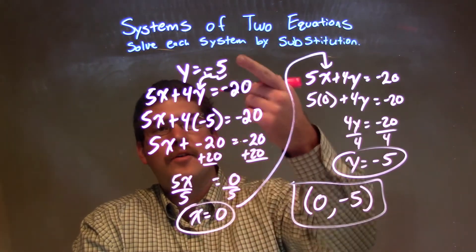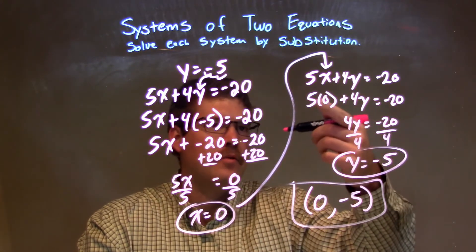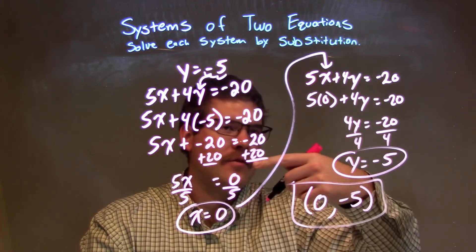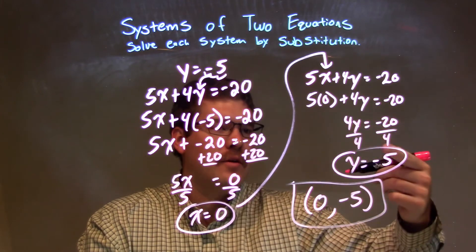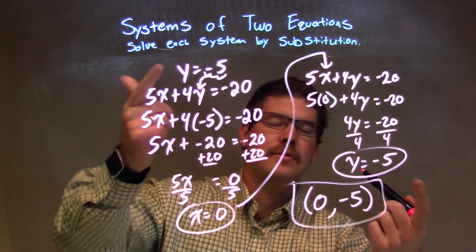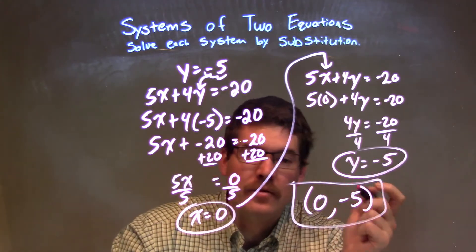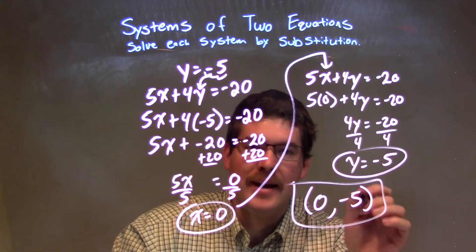At that point, I can just look at the beginning and say y was negative 5, but I plugged it into the second equation. Simplify. 0 for x eliminates the 5 times 0. Divide both sides by 4. And, we get y by itself to be that negative 5. Quick way to kind of double check there. We wrote this as a coordinate point for our final answer, which is 0 comma negative 5.